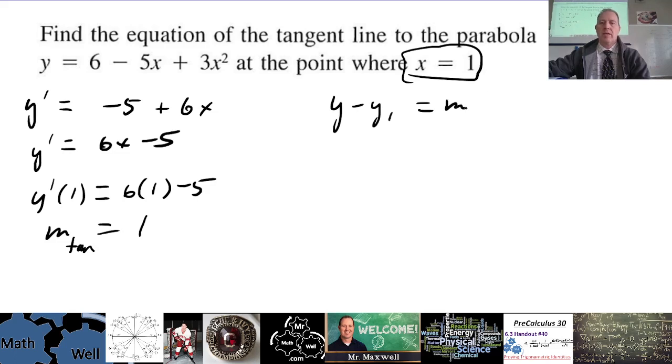And then y minus y1 equals m times x minus x1. What that says is that's the equation for the line. Now we're going to put a point that we know that's on this line, which is going to be the point of tangency.